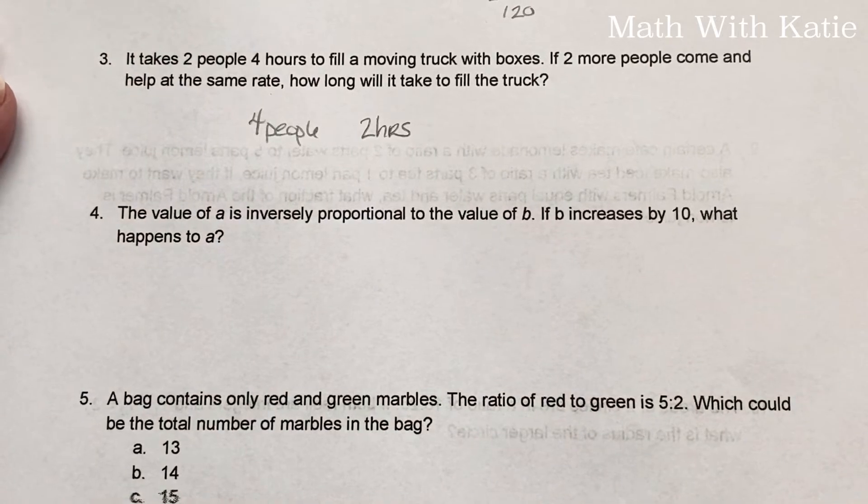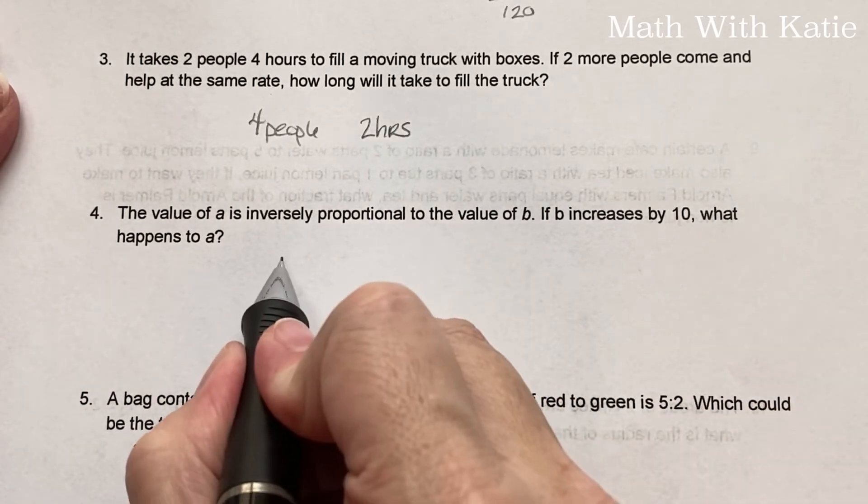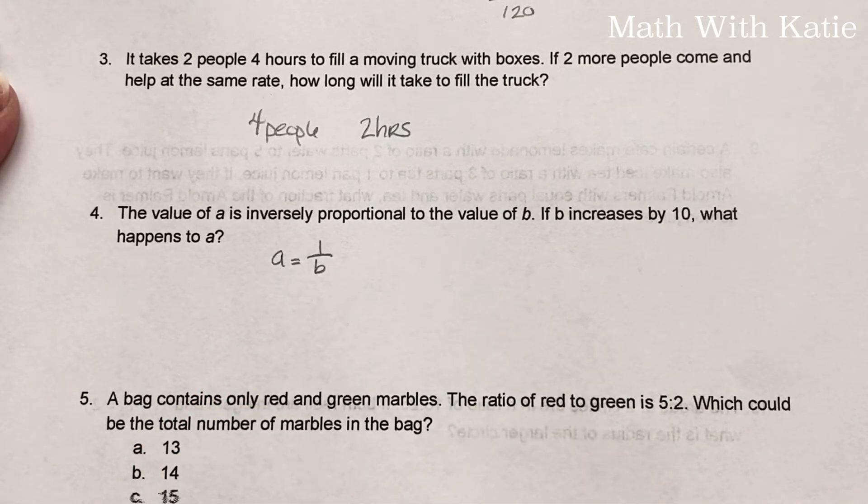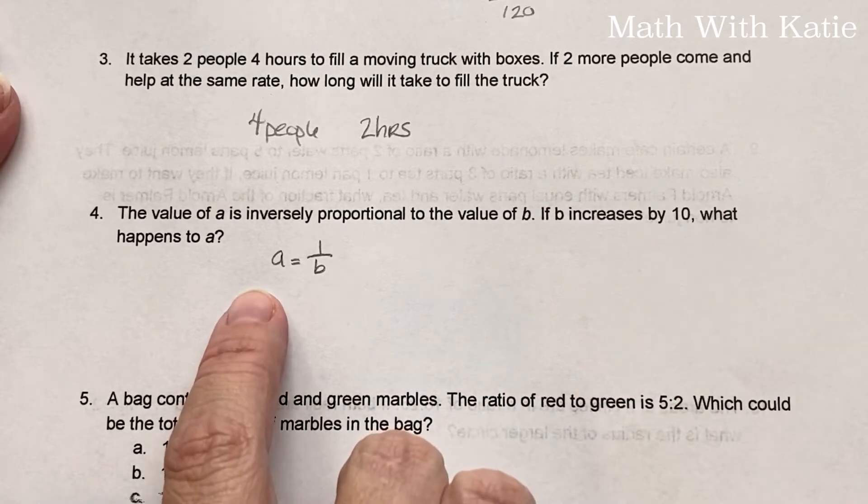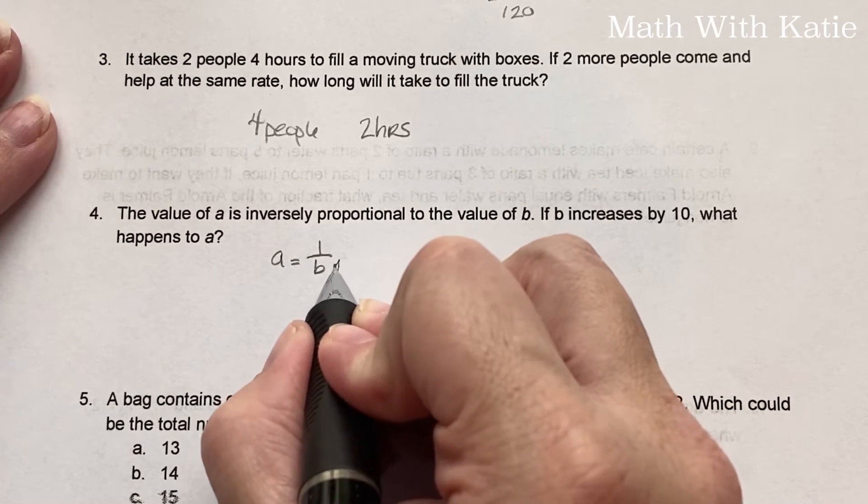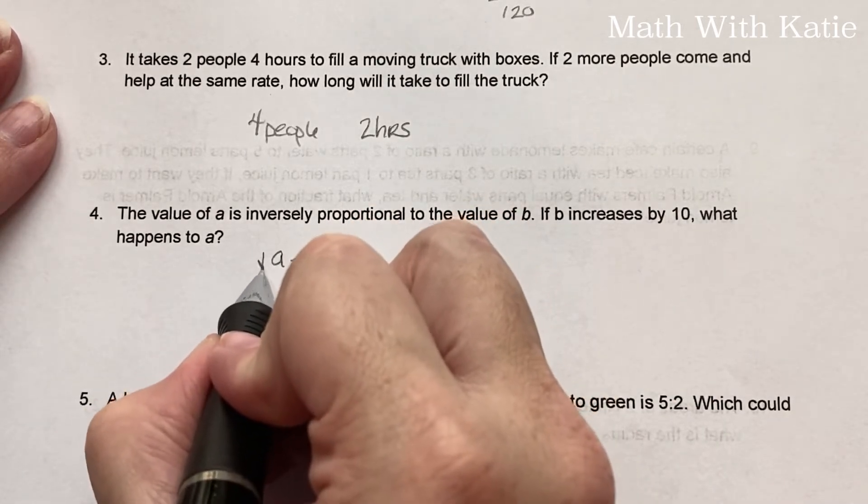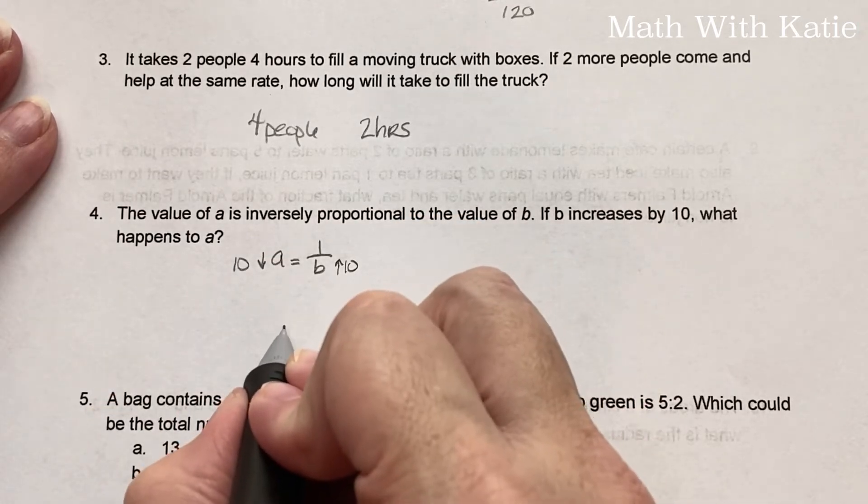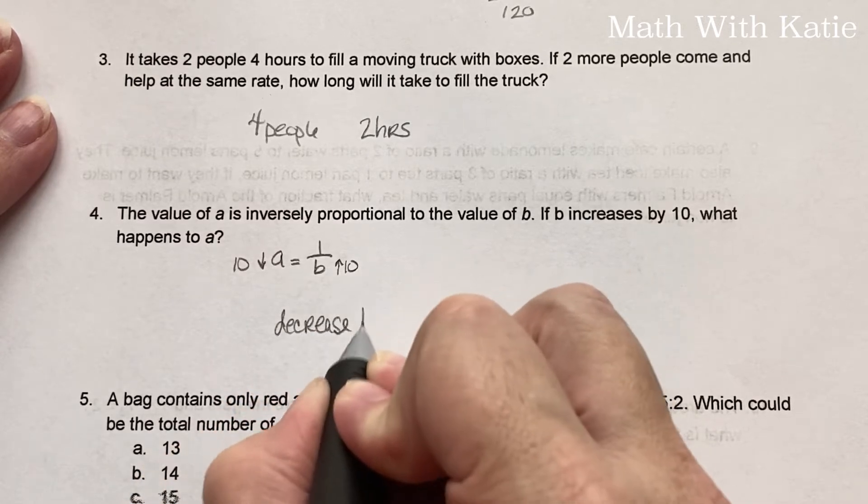The value of A is inversely proportional to the value of B, which means A is 1 over B. If B increases by 10, what happens to A? So if this denominator increases by 10, A is actually going to decrease by 10. So our answer is it's going to decrease by 10.